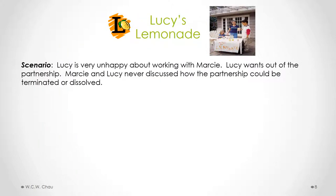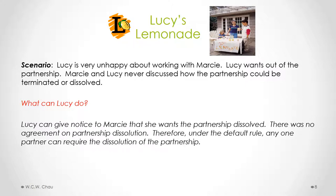Lucy is very unhappy working with Marcy and wants out of the partnership. Lucy and Marcy never discussed how the partnership could be terminated or dissolved. What Lucy can do is give notice to Marcy that she wants the partnership dissolved. Since there was no agreement on dissolution, under the default rule in the Partnerships Act, any one partner can give notice to require dissolution.